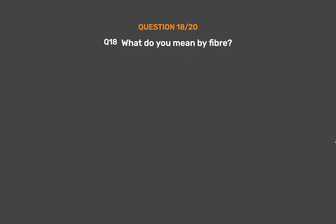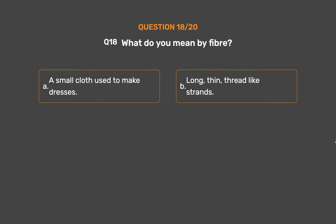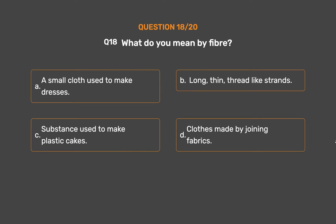Question number 18. What do you mean by fiber? Option A, A small cloth used to make dresses; Option B, Long, thin, thread-like strands; Option C, Substance used to make plastic; Option D, Clothes made by joining fabrics.